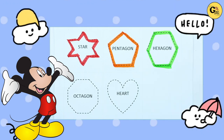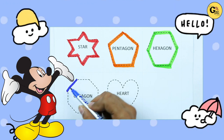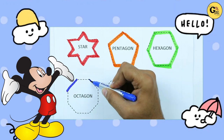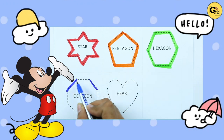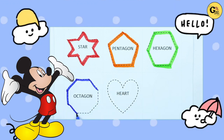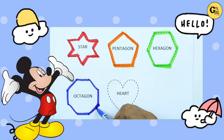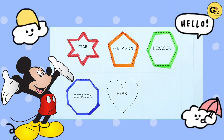Octagon. One line, two line, three line, four, five, six, seven, eight. Eight lines means octagon.